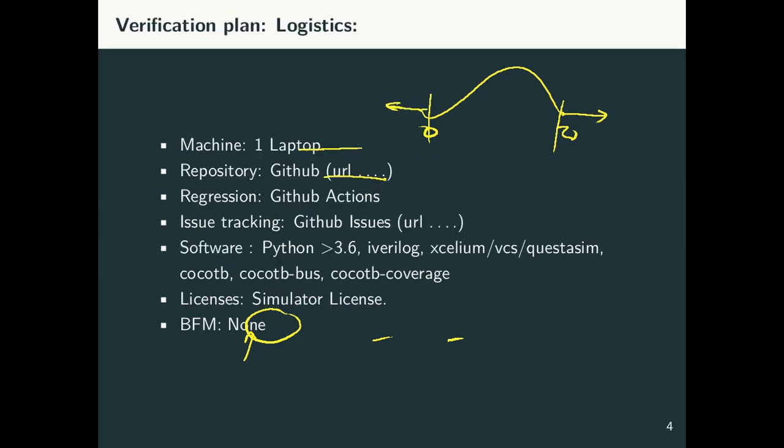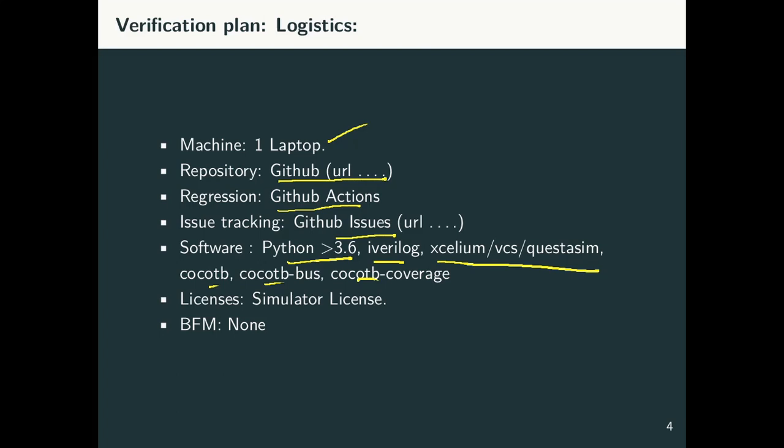Now, for our particular test plan, what we require is a machine, one laptop or a PC. Then we are storing all our code on GitHub. That is our code repository. For regression, we are using GitHub Actions. For issue tracking, we have GitHub issues. The software requirement is we require a version of Python, which is greater than 3.6. We require Icarus Verilog. For code coverage, we require one of the commercial simulators. And then we require CocoTB, CocoTB Burst and CocoTB Coverage as part of our software toolkit. On the licenses side, we are not using any BFM, so there is no BFM license. But there is a simulator license for code coverage. This would come as a part of our logistics.